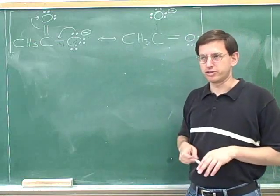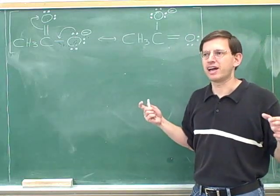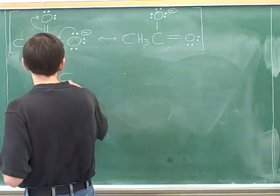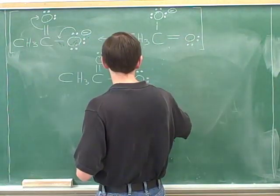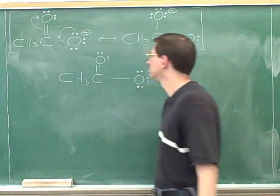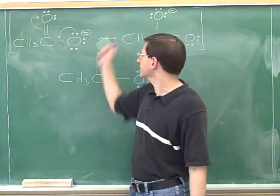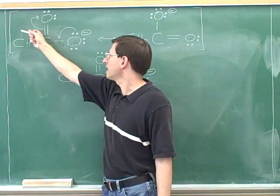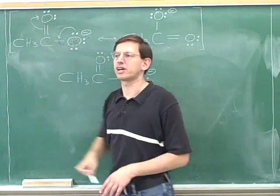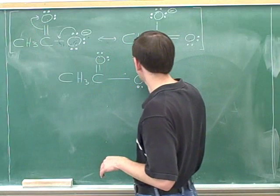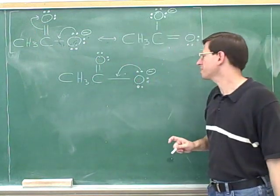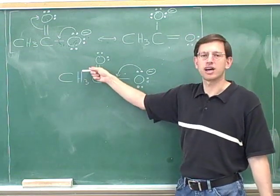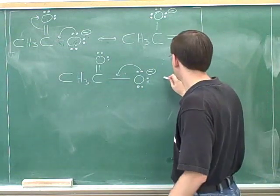Obviously these two structures that I drew here are totally legal and valid. But what would I mean by something that's invalid or illegal? Remember that to get this resonance structure over here I moved the lone pair into the pi bond and then I kicked this pi bond off of this carbon. But what would have happened if I just moved the lone pair into the pi bond but I didn't put any arrows on this carbon? What would you get then?